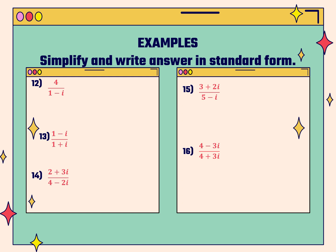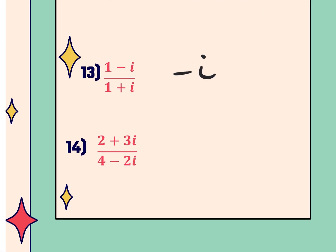We already did examples 12 and 13. The answer to number 12 was 2 plus 2i, and the answer to number 13 was just negative i. So now we're at number 14, where we left off yesterday. You can't leave this i in the denominator, so we need to multiply both the numerator and the denominator by the complex conjugate of that denominator — same numbers, but opposite signs. So I'm going to multiply both the numerator and the denominator by 4 plus 2i.